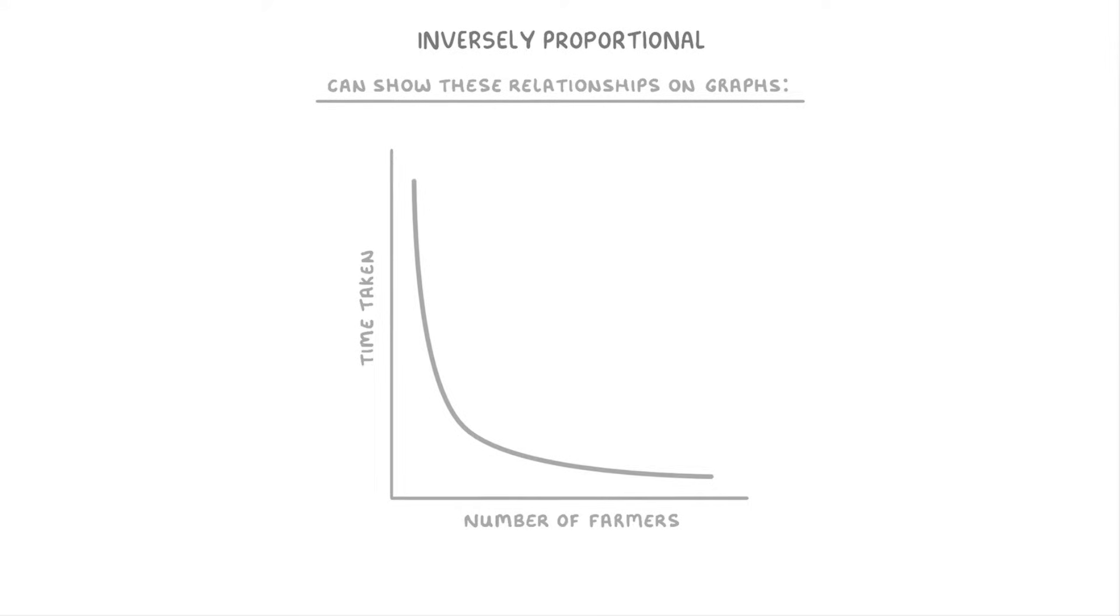If we start in the top left, we can see that this point corresponds to only a few farmers and a really long time taken. But as we move down and to the right, like to this point down here, the number of farmers gets bigger and bigger because we're moving to the right, and the time taken gets smaller and smaller because we're moving down.